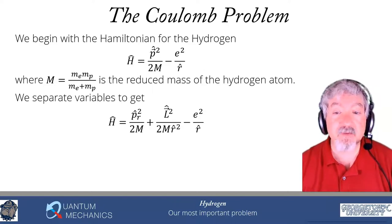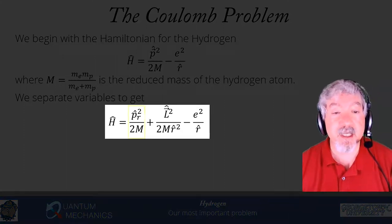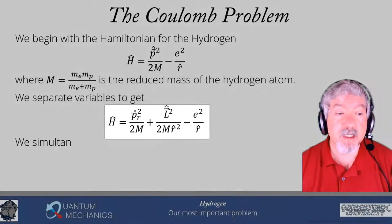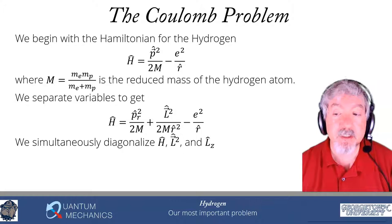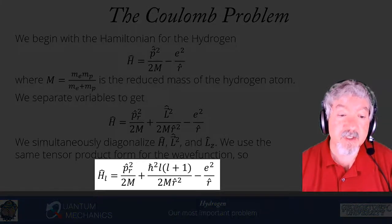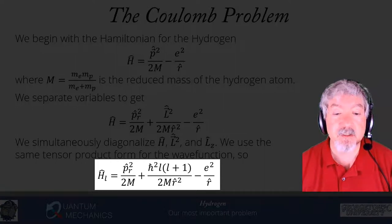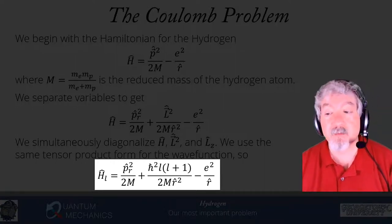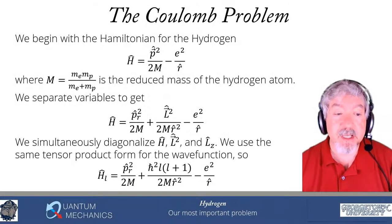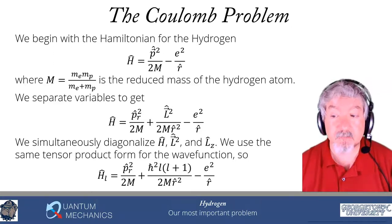This is a central force problem, so we're going to separate variables. We rewrite the kinetic energy in terms of the radial momentum squared and the angular momentum squared. We use the tensor product for the wave function, which allows us to evaluate L squared acting on the LM eigenstate, giving back h-bar squared times L times L plus 1. So we now have an infinite number of different Hamiltonians H_L, given by P_R squared over 2M plus h-bar squared L(L+1) over 2MR squared minus e squared over r, using the maximally commuting set of H, L squared, and L_z.